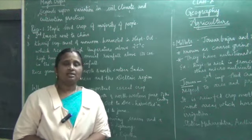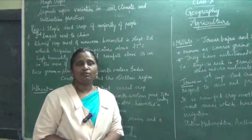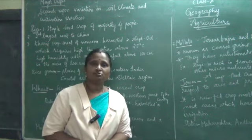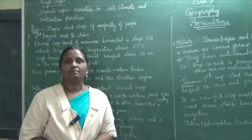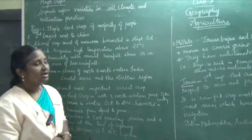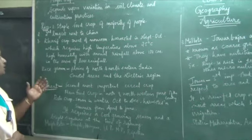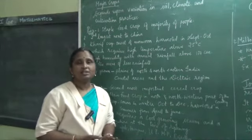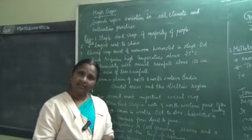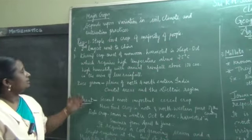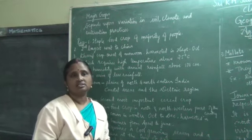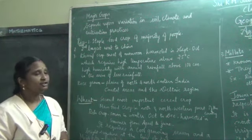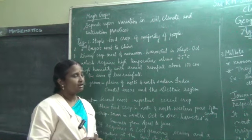The major crops grown in India — the most prominent crop, which the largest number of people consume, is rice. Rice is said to be a staple food crop consumed by the majority of people. India is said to be the second largest producer of rice, next to China. Rice is sown during the Kharif season, on the onset of monsoon, and harvested in September to October.